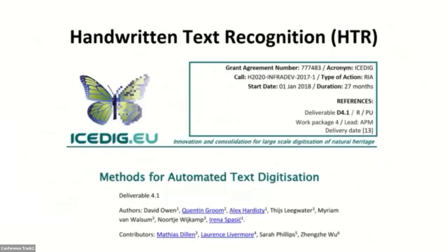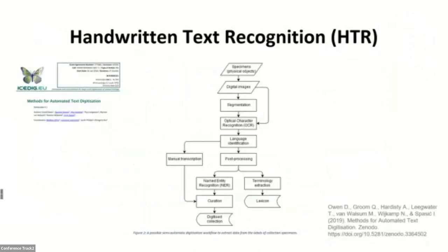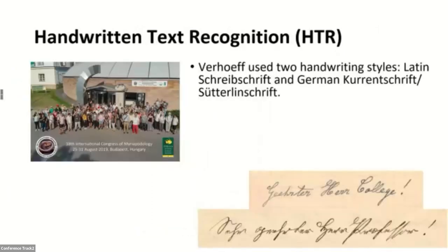During our work on handwritten text recognition from manuscripts, we made use of the iStick deliverable methods for automatic text digitization from January 2019. Figure 2 from that deliverable presents a workflow on digitization of specimens and their labels. It also works for documents as physical objects, and we use it as a reference. I participated in the 80th International Congress of Myriapodology in Budapest, Hungary in 2019, organized by the International Society of Myriapodology.